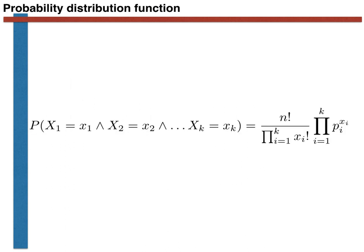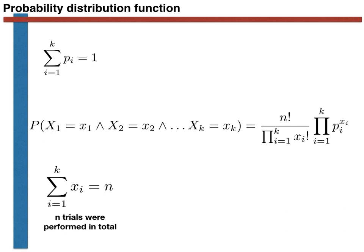We can write a probability function for the k random variables generated through this procedure. In particular, we can write an expression for the probability that we will get exactly x1 outcomes of type one, x2 outcomes of type two, x3 outcomes of type three, and so on. The pi values are the individual probabilities for observing each of the k possible outcomes in one trial, and the sum of all pi values must equal one. The Xi values are the number of outcomes of each type, and the probability is only non-zero if the sum of all Xi equals n.